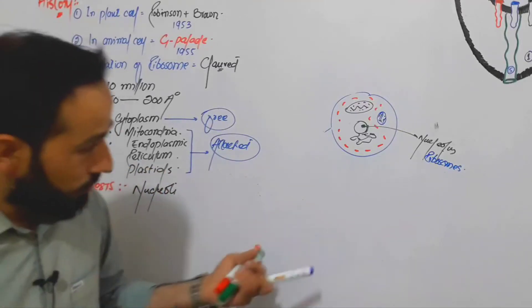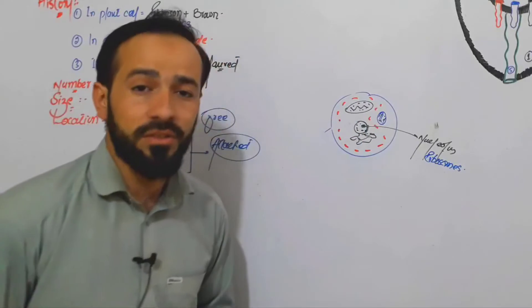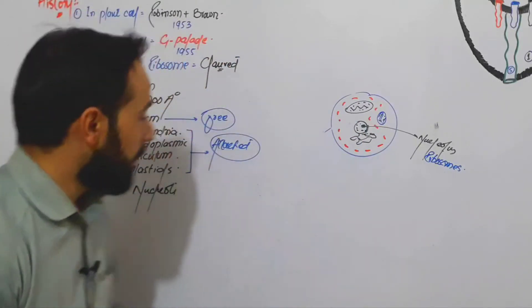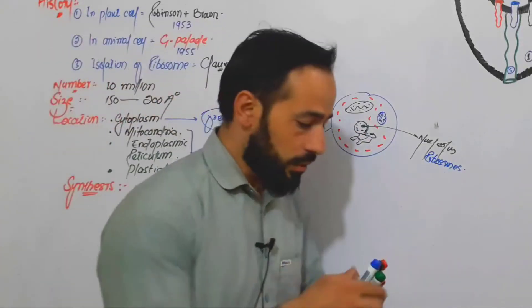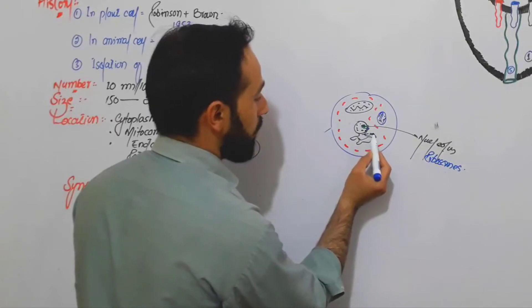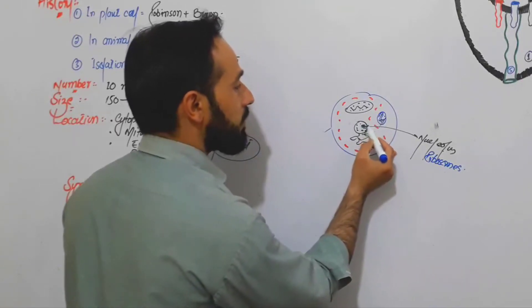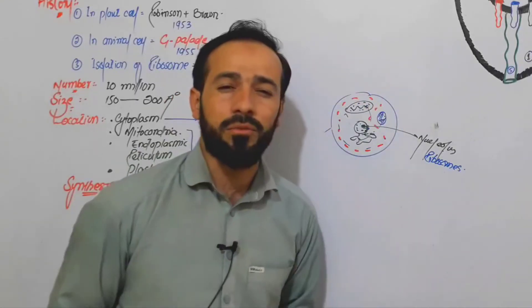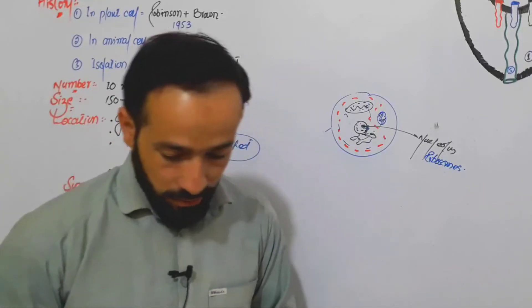Nucleoli — we know that inside the nucleus, in a human cell, we have about 10 nucleoli. Ribosomes are synthesized in the nucleoli and then they come out and make attachment with the endoplasmic reticulum, or they go to plastids, or they go to mitochondria, or they remain in the cytoplasm, making proteins for our cell.